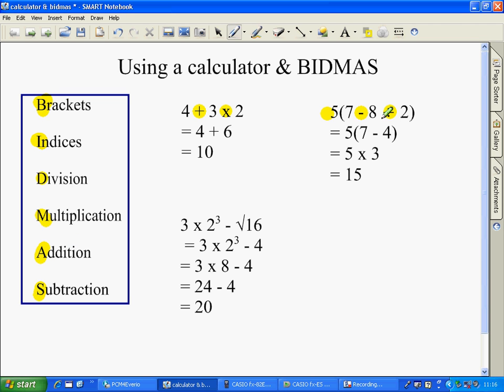Division before subtraction. So 8 divided by 2 is 4, so we now have 7 minus 4. We still do what's in the brackets first. 7 minus 4 is 3, 5 times 3 is 15.